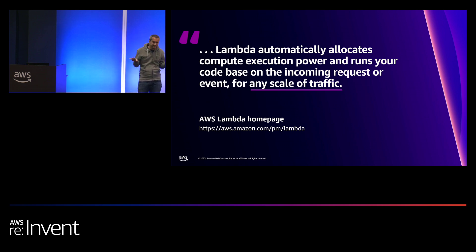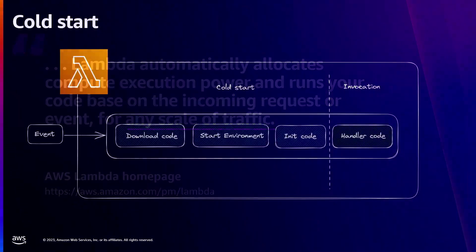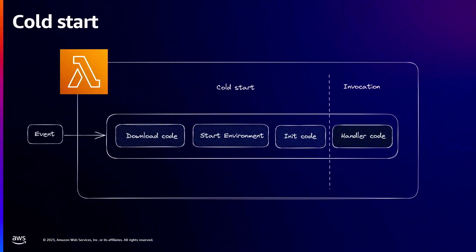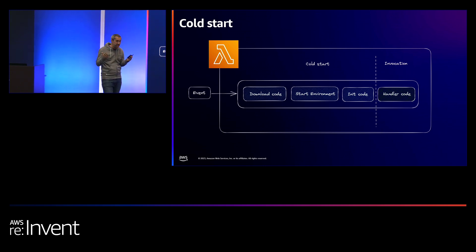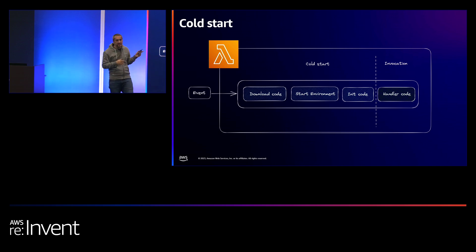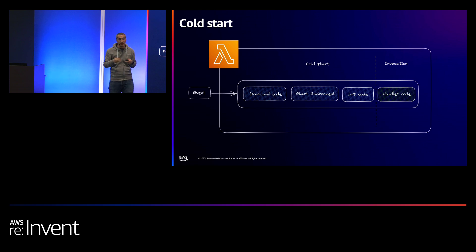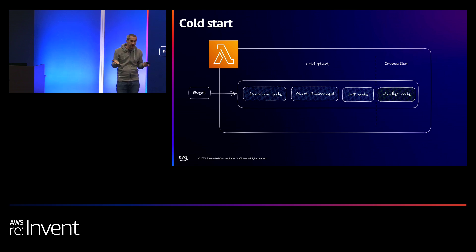So let's look at cold starts. Lambda receives an event, and if it's the first request or there's a big spike, you experience a cold start. A cold start is split into three phases. The first is AWS downloading the code — it can be a ZIP or an OCI image published on ECR — AWS needs to take your code and bring it to the Lambda environment.